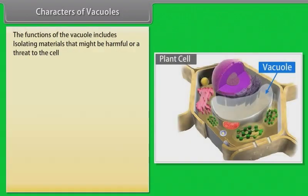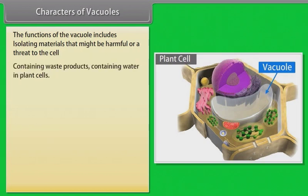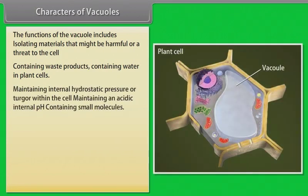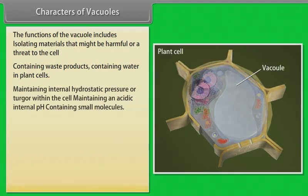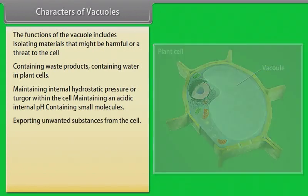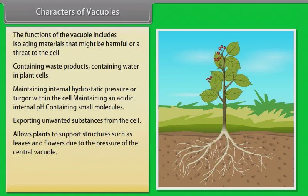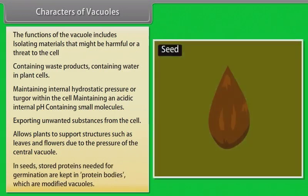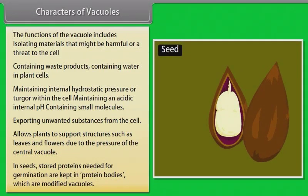The functions of the vacuole include isolating materials that might be harmful or a threat to the cell, containing waste products, containing water in plant cells, maintaining internal hydrostatic pressure or turgor within the cell, maintaining an acidic internal pH, containing small molecules, and exporting unwanted substances from the cell. Vacuoles allow plants to support structures such as leaves and flowers due to the pressure of the central vacuole. In seeds, stored proteins needed for germination are kept in protein bodies, which are modified vacuoles.